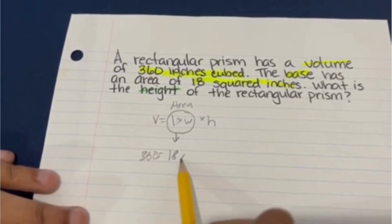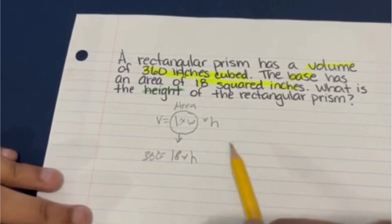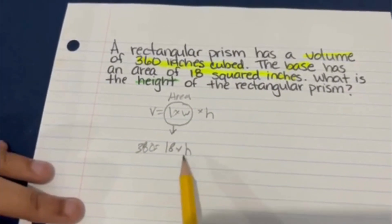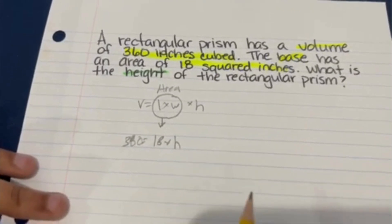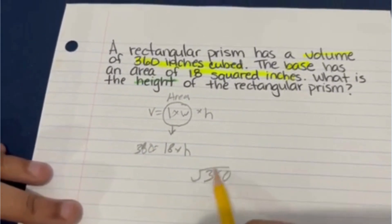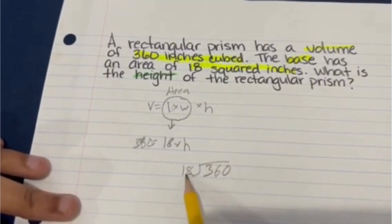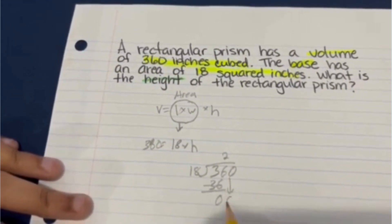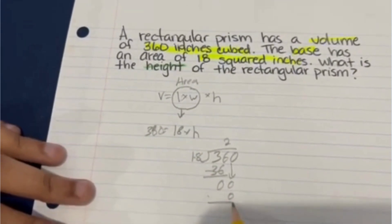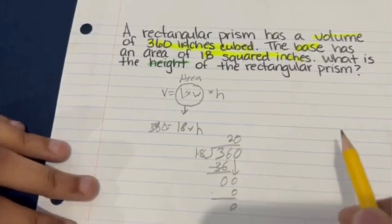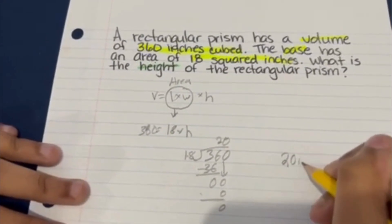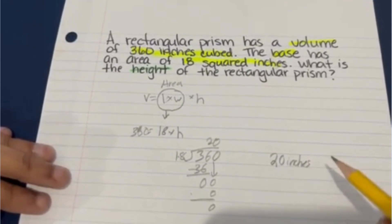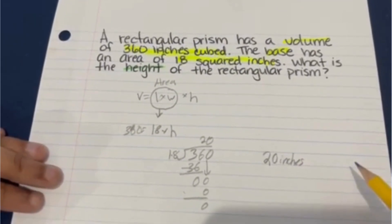We know that volume equals length times width times height, and length times width is the area. Since the base area is already given as 18, and the volume is 360, we have 18 times the height equals 360. To find the height, we use the inverse operation of multiplication, which is division: 360 divided by 18. 18 goes into 36 two times, which is 36. 36 minus 36 is 0. Bring down the 0. 18 goes into 0, zero times. Meaning that the height is 20 inches. Because this is a one-dimensional measure, we don't write inches squared or inches cubed.